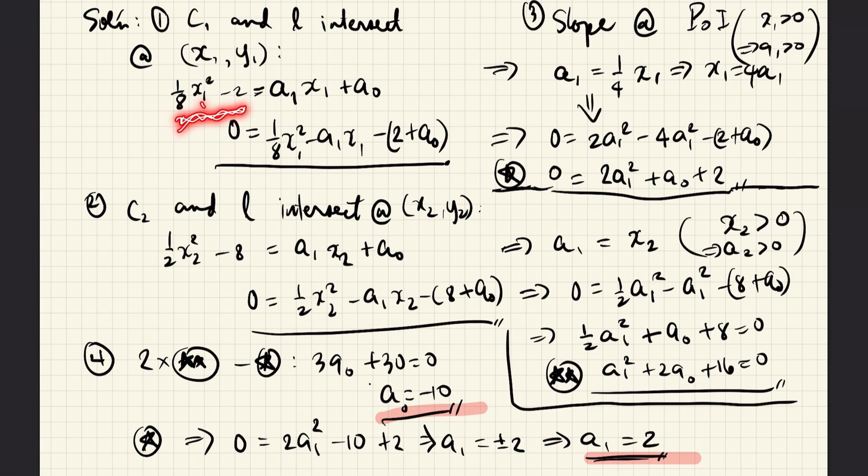Because we know that y equals this for C1, we replace all the x's here with x1. And because we also know that for L, the y is equal to this, then we can also replace the x's here with x1. And because these are all equal to y1, we can also equate both of these expressions. And that is what we obtain here. We rearrange this equation and we obtain this equation.